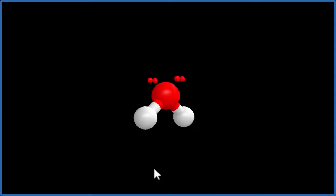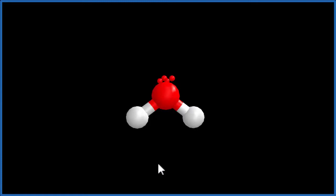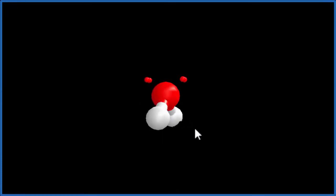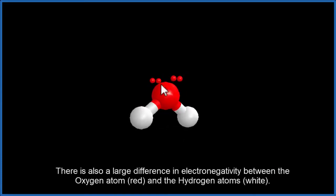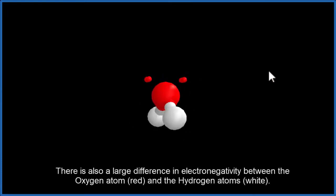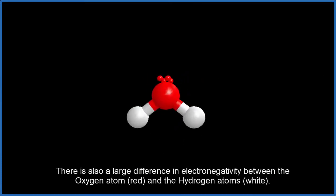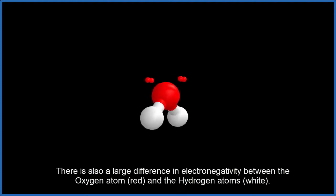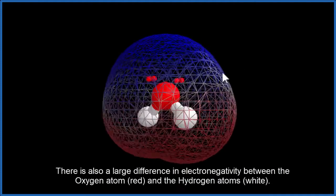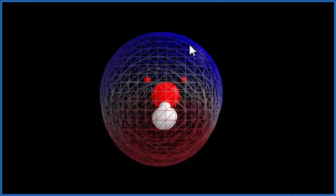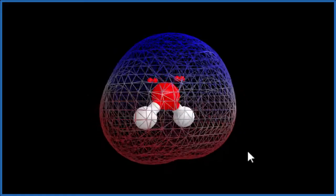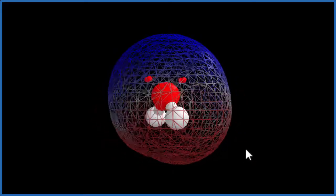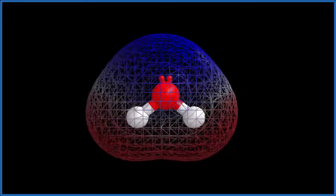When we look at the water molecule, we can see that it's not symmetrical. We have hydrogens down here and lone pairs up here. If we look at the surface of water, we'd see there's a distinct negative and a distinct positive side. So it's a polar compound.